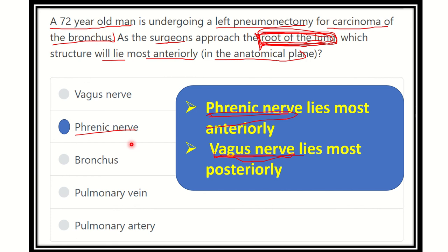Our answer is the phrenic nerve. Other options: the vagus nerve lies most posteriorly. The bronchus is located within the hilum at the root of the lung. The pulmonary vein and pulmonary artery are also present at the root of the lung, but they are located in the middle place between the phrenic nerve and the vagus nerve. So our answer is the phrenic nerve. The root value of the phrenic nerve originates from cervical 3, cervical 4, and cervical 5 — this root value is also important as questions arise from this point.